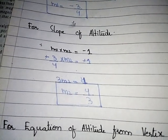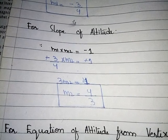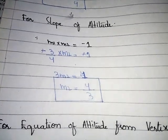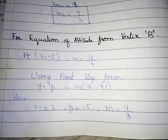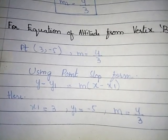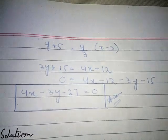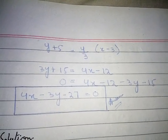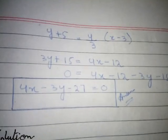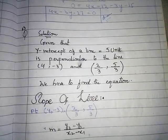Altitude and perpendicular are the same. Using the perpendicular slope formula m1·m2 = -1: (-3/4)·m2 = -1, so m2 = 4/3. For equation of altitude from vertex B at (3, -5) with slope 4/3: y - (-5) = 4/3·(x - 3), so y + 5 = 4/3·(x - 3). Multiplying by 3: 3y + 15 = 4x - 12, giving 4x - 3y - 27 = 0. This is the required equation.